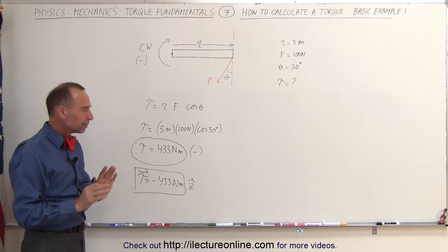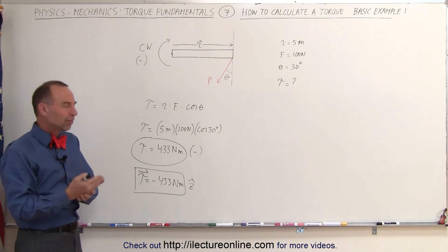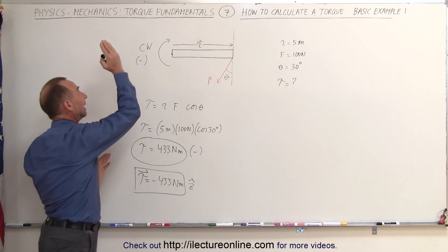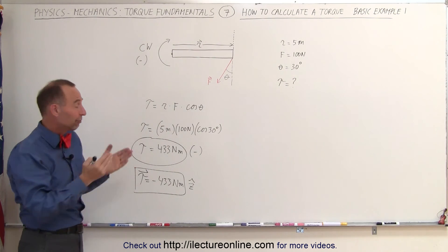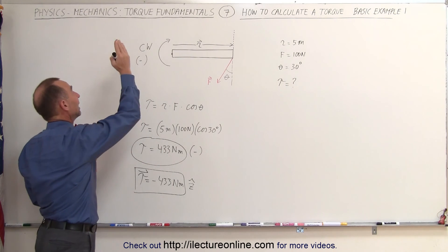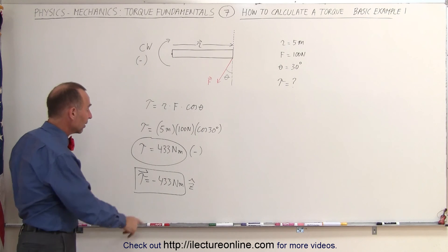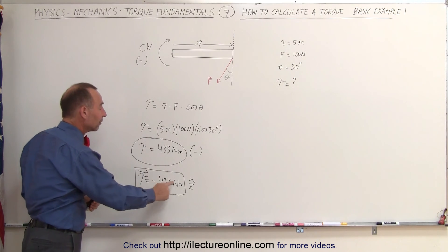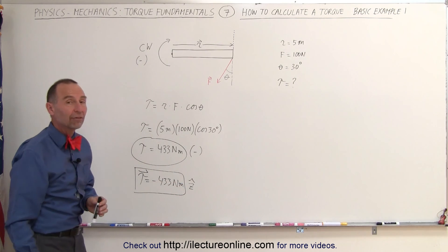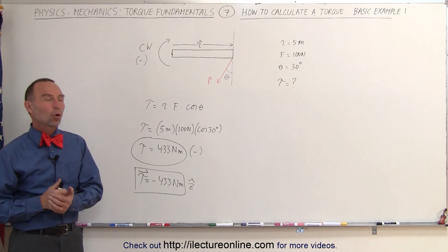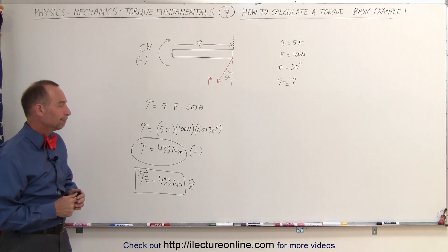The negative sign is often misunderstood when it comes to torque. We usually talk about magnitudes and directions, so I'd rather see it as 433 newton meters in a clockwise direction. Or if you want to write it as a vector, put a negative in front of it and then put the direction of that vector as well. That's how you calculate the torque in a situation like that.